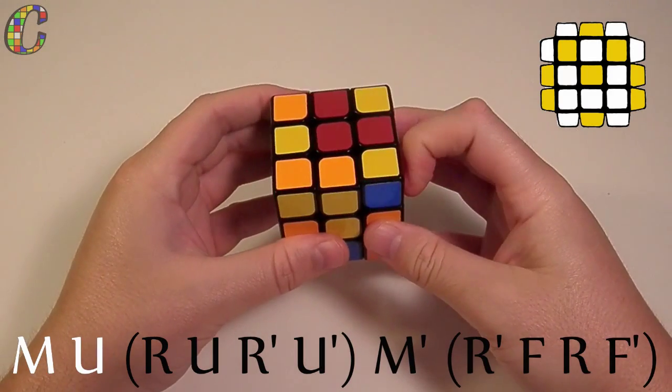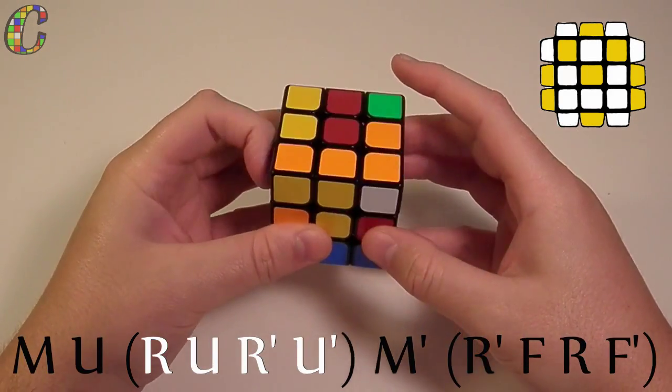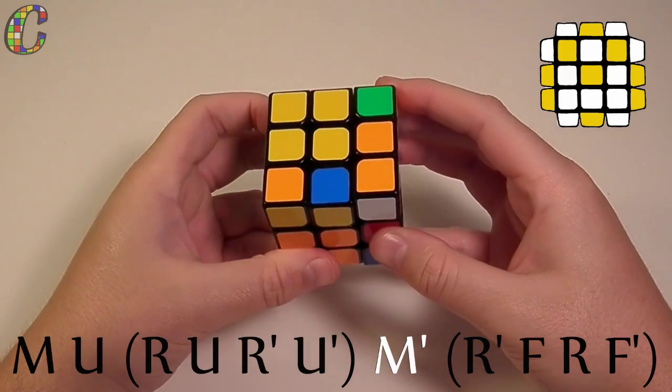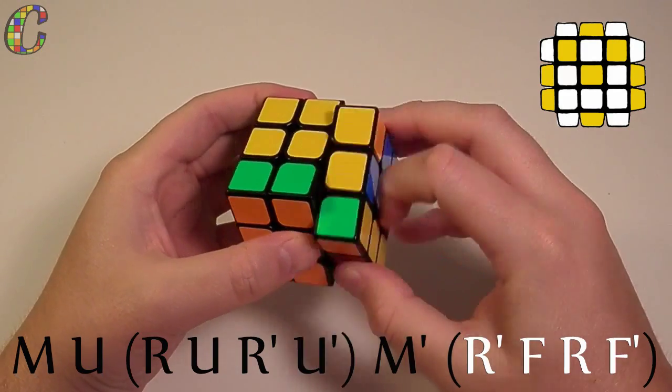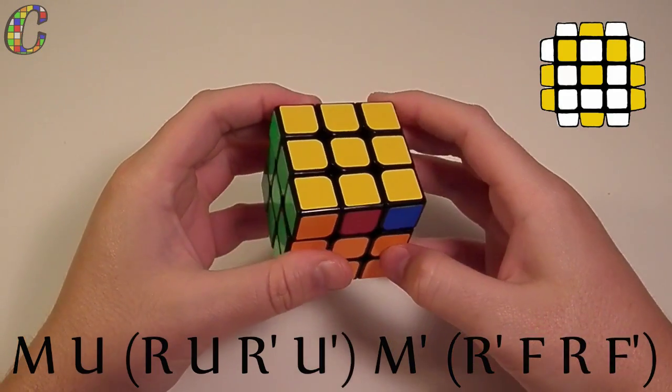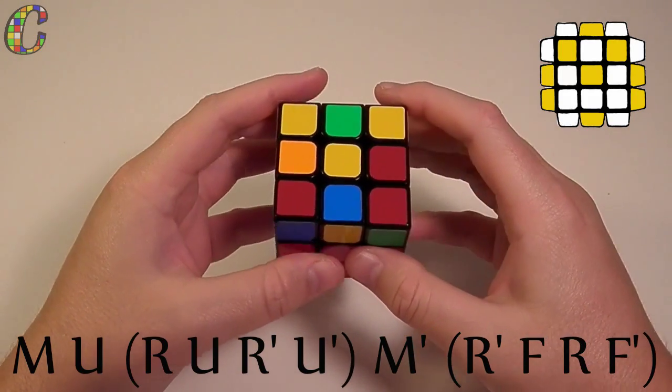M U sexy move R U R' U' M' then a sledgehammer move R' F R F'. And that'll orient your layer. And here's how I execute that case.